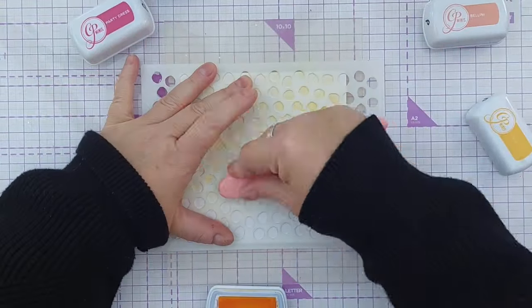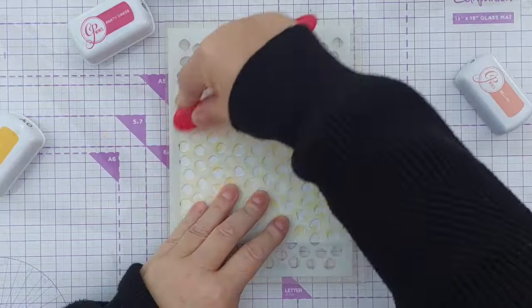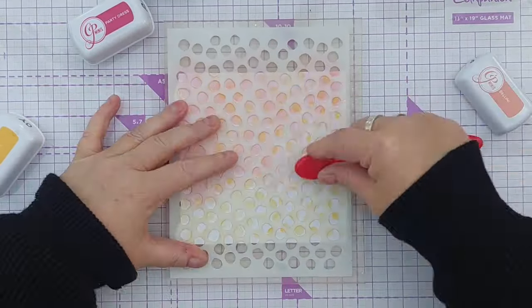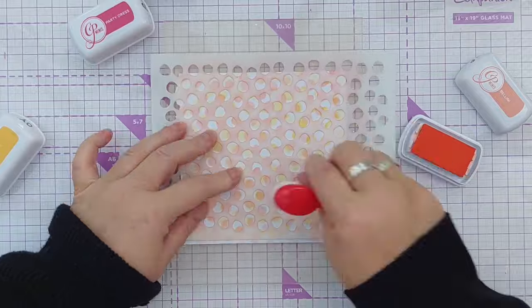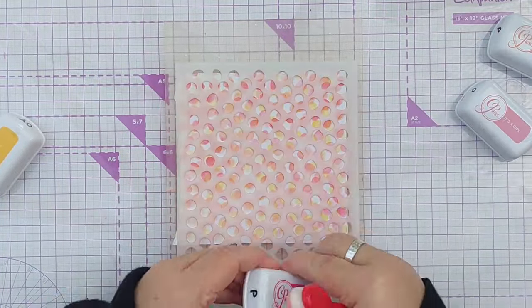If you haven't got dot markers, just blend some colors through a stencil, shifting the stencil around so that the dots overlap. You get a softer look than you get with the dot markers, but it works just as well.